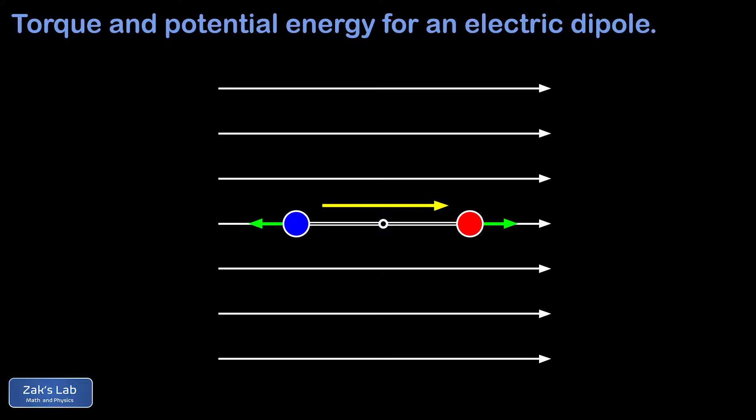Quick reminder: the dipole moment is a vector pointing in the direction from minus to plus charge. The instant we've frozen our animation at is the stable equilibrium position — the torque is always twisting our dipole toward this orientation. The first thing on our agenda is to derive a simple formula for that torque as a function of angle.